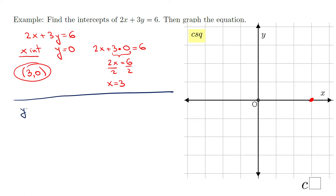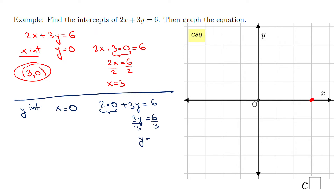Now for the y-intercept: the y-intercept means x equals zero. So we have 2(0) + 3y = 6. Two times zero is zero, so we have only 3y = 6. Divide by 3: y = 2. It's very important to write this as the ordered pair (0, 2).